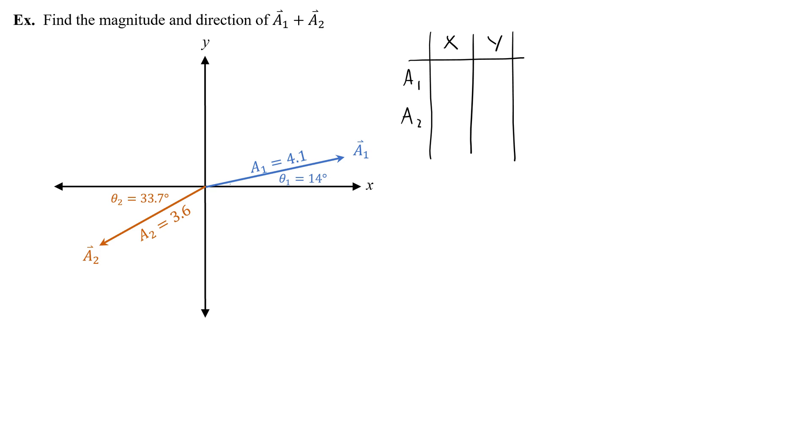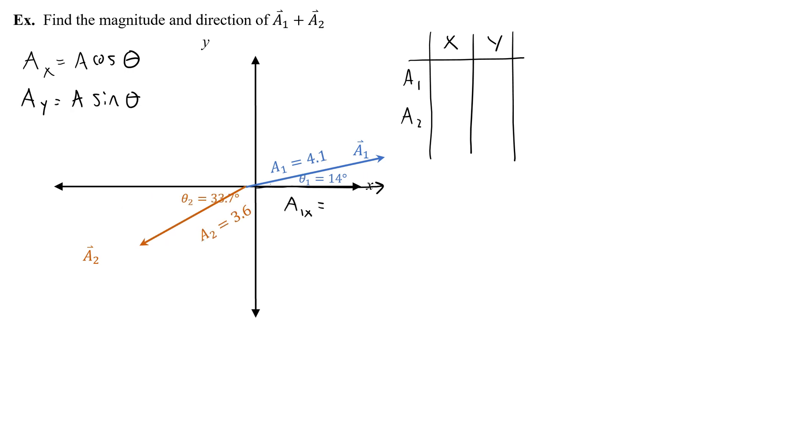Now, to get a1x, I'm going to need to find the x component using this magnitude and direction. The x components and the y components are the length of the vector, so like for a1 that's 4.1, for a2 it's 3.6, times cosine of the angle. And as long as I use a unit circle angle, meaning an angle in reference to the positive x axis, then I can use cosine for x. And y is a times sine of theta. So I'm going to do this for x and for y.